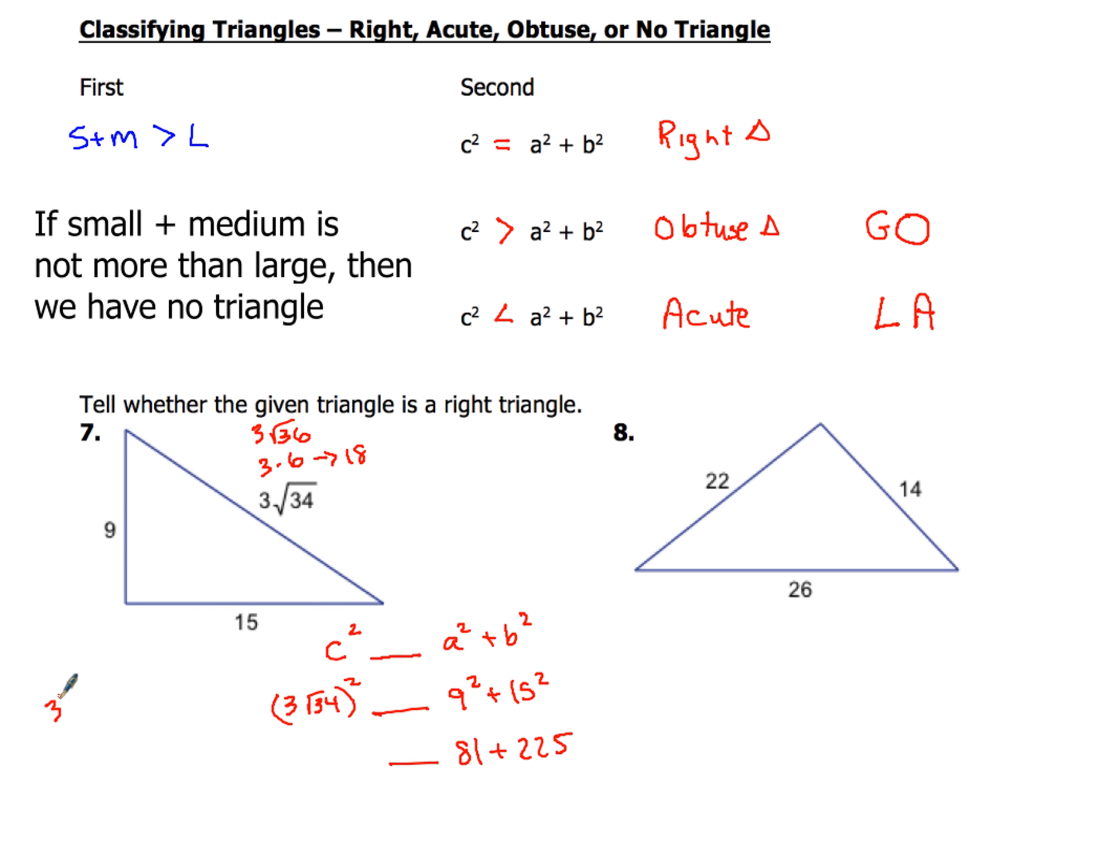So 3 squared, let me just do these separately. 3 squared is 9. Now, if I have the square root of 34 and I square that, that just gives me 34. So then what I have to do is multiply 9 and 34 together.